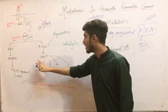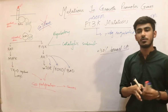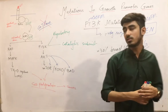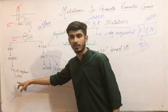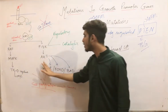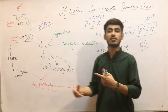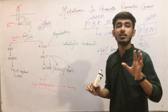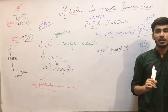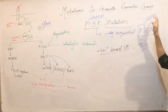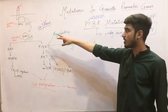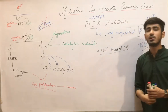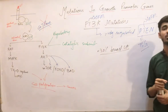PI3K activates AKT, which carries out over-proliferation and cell growth. In this lecture, we studied the mutations in the growth promoter genes: the RAS mutation, BRAF mutation, and PI3K mutation. In the next lecture, we will study mutations in transcription factors, after which we will have completed the first hallmark — growth self-sufficiency.